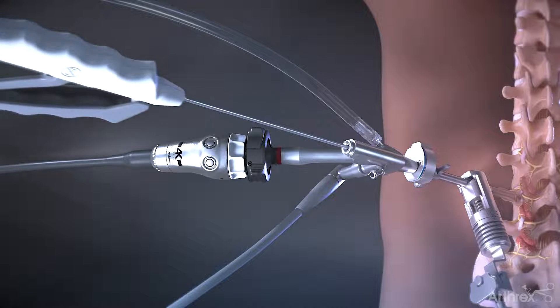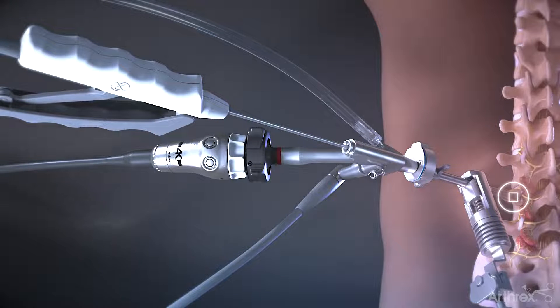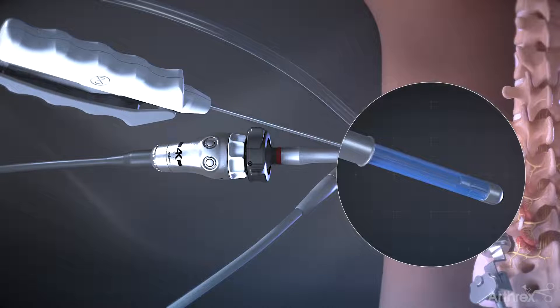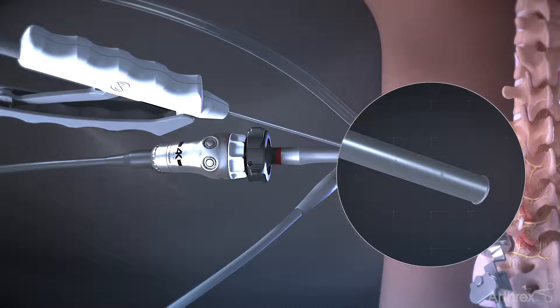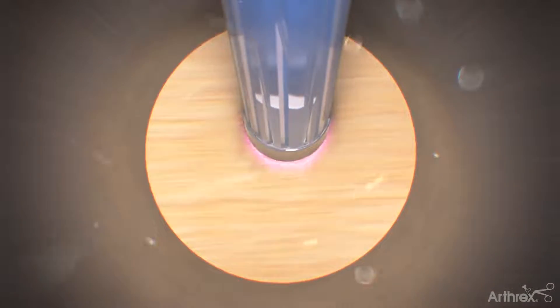A series of endoscopic tools, including an electrosurgical probe, graspers, and others, are inserted through the working channel of the endoscope to remove excess tissue and coagulate blood vessels.